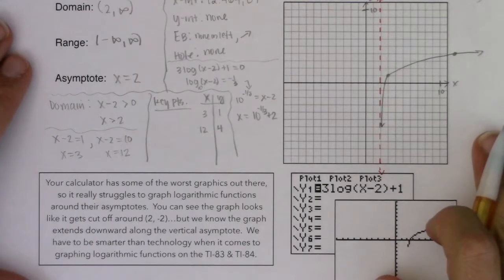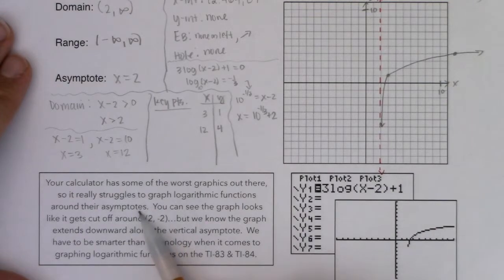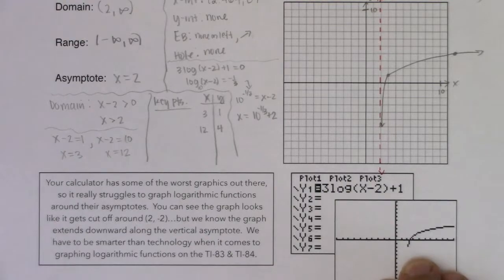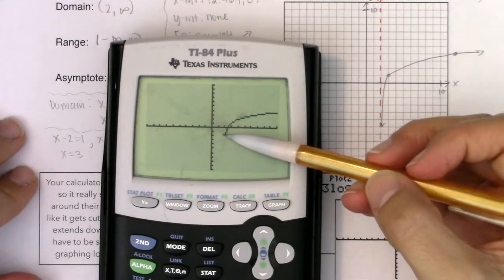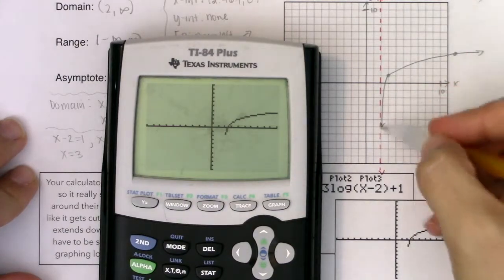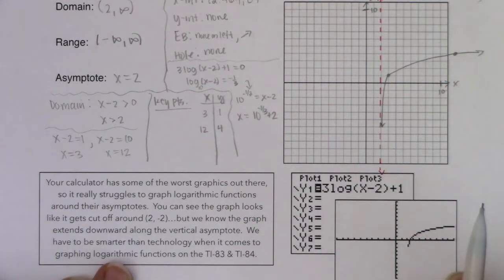And this is where we would need to be smarter than technology. We would need to recognize that the calculator is doing the best it can, but it's really not getting the job done. So with this as your graph, I would still want to see the extended part on your actual graph that you turned into me. And I wrote you a little note about it that our calculator has some of the worst graphics out there, and it really struggles to graph logarithmic functions around their asymptotes. And if we look at this calculator, it looks like it gets cut off somewhere around 2, negative 2-ish. But that's just not the case. It definitely extends below that. So we have to be smarter than technology.